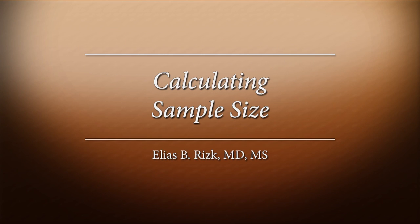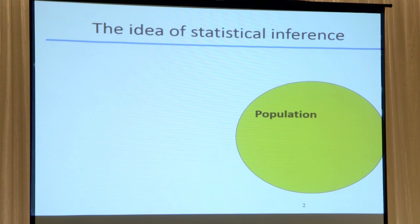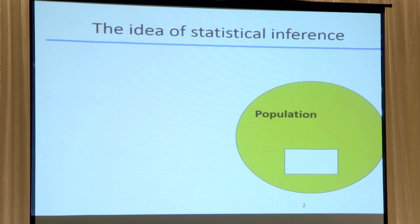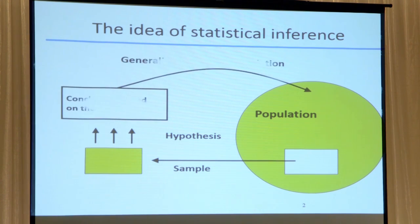I was assigned the task to present how to calculate the size of a population when you're trying to set up a study of any sort — either a cohort study, a case control study, a randomized trial — and I'm going to try to simplify this as much as possible. The idea behind obtaining an adequate sample size is that we can't really test the whole population at hand. We want to obtain a certain number of a population, test a hypothesis, and reach a conclusion that hopefully we can generalize to the population.